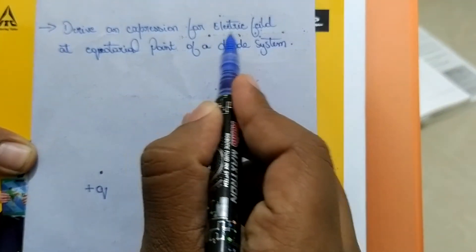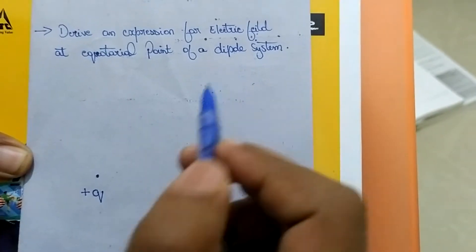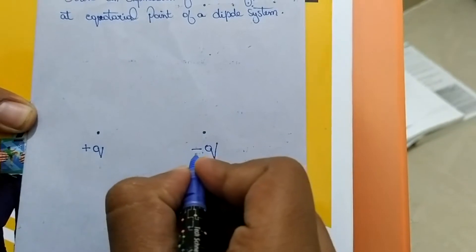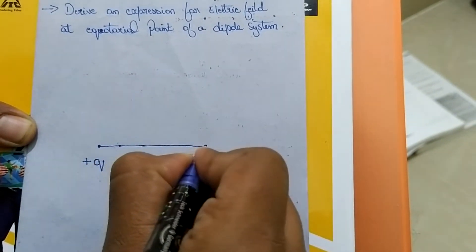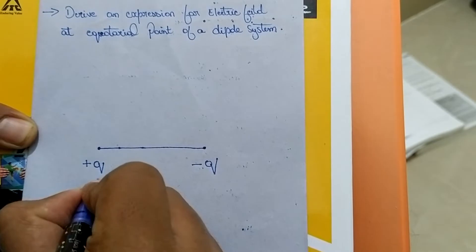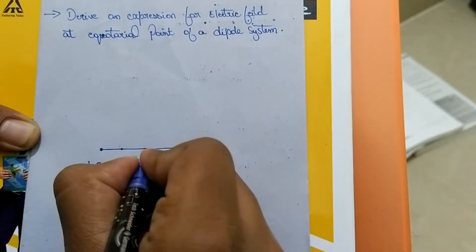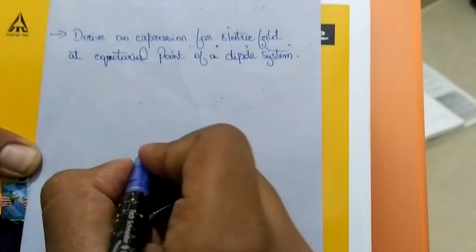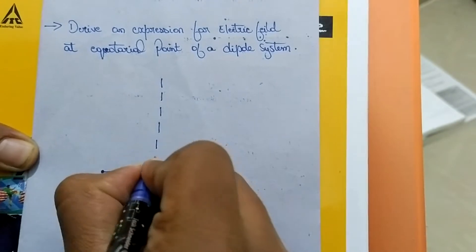We derive an expression for electric field at the equatorial point of a dipole system. Consider a dipole system of charge plus Q and minus Q separated by a distance 2a. Let O be the center of the dipole system, and let us consider an equatorial line for the given dipole.